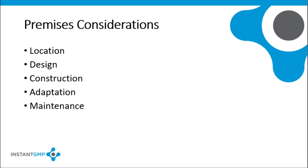There are several things to consider when designing the premises. The land and buildings where the manufacturing operations are located must contribute towards the quality of the products. The design and construction must avoid the risk of contamination, permitting effective cleanliness and maintenance, minimizing the buildup of dirt and dust, and preventing quality defects. We will look at each of these areas in more detail.